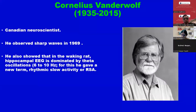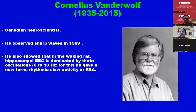He also showed that in the waking state, hippocampal EEG is dominated by theta oscillation. For this, he gave a new term: rhythmic slow activity or RSA. So theta oscillation, as we know, can happen in certain types of temporal lobe epilepsy.